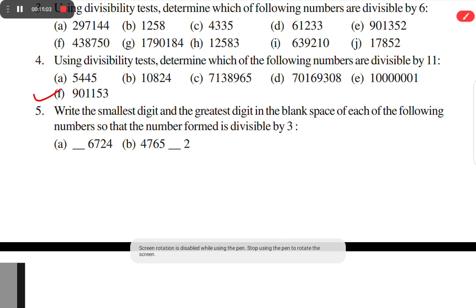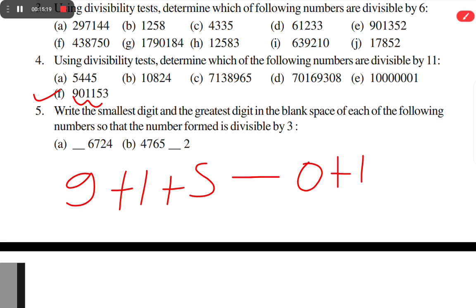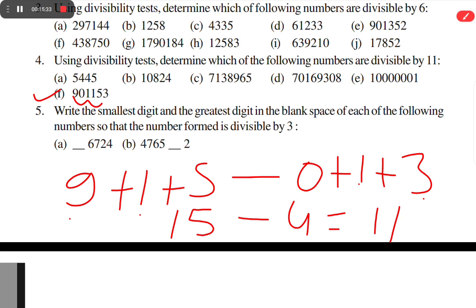Option F: 9 plus 1 plus 9 plus 1 plus 5 minus 9 plus 1 plus 5 gives 25 minus 15 = 11. Wait — summing odd places: 9 plus 1 plus 5 = 15, even places: 0 plus 1 plus 3 = 4 — correction: the result is 11, so this number is also divisible by 11.